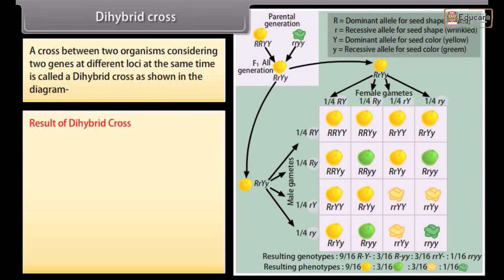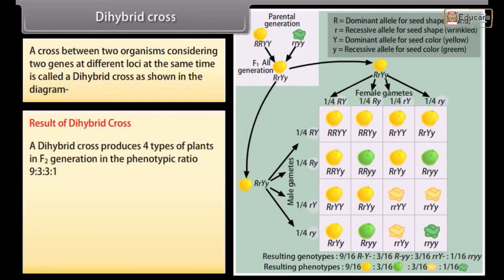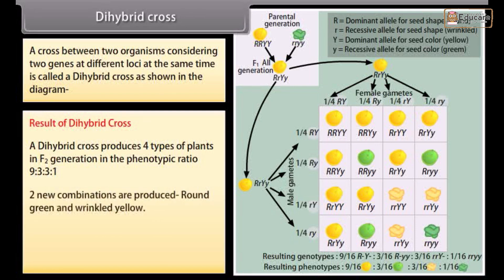Result of dihybrid cross. A dihybrid cross produces four types of plants in F2 generation in the phenotypic ratio 9:3:3:1. Two new combinations are produced: round green and wrinkled yellow.